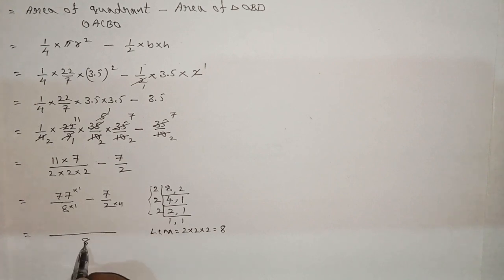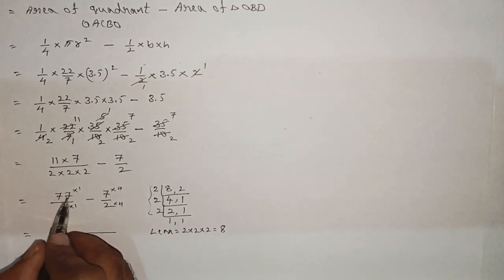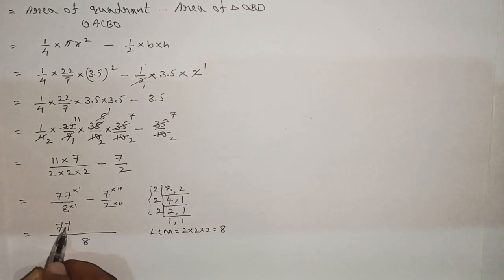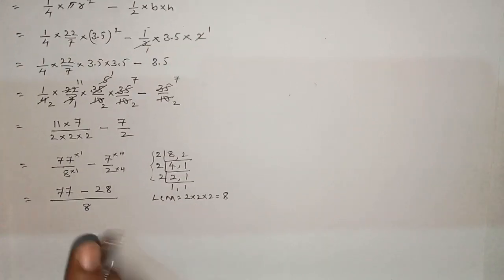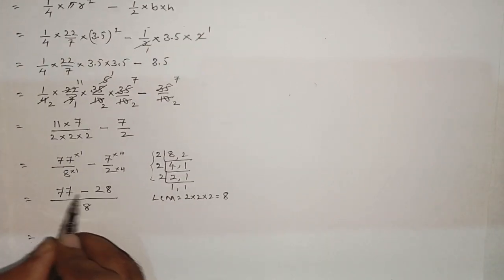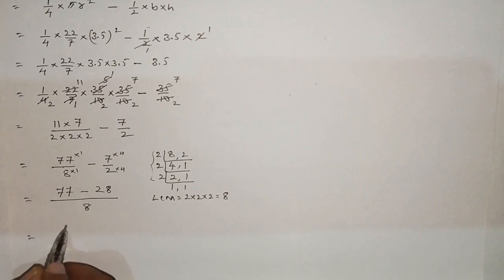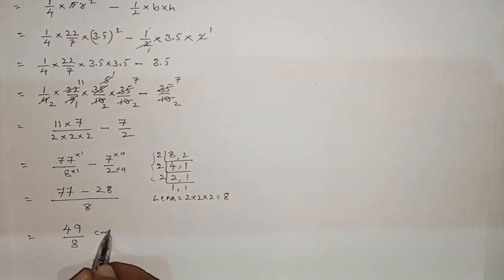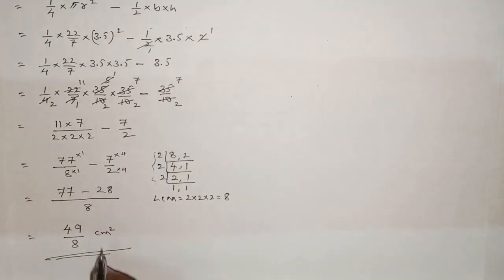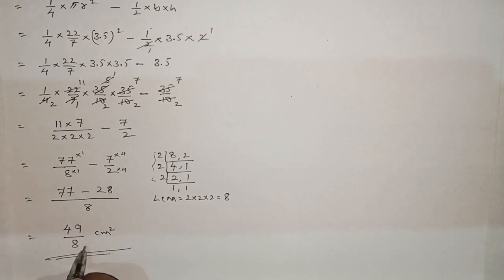Two fours are eight, so the numerator is four multiplied — 77×1 is 77, minus 4×7 is 28. So 77 minus 28 equals 49. The result is 49/8 cm². This is the answer for the shaded region.